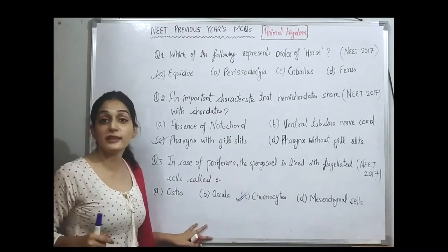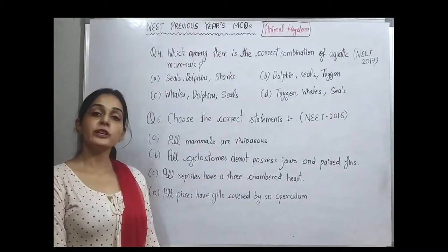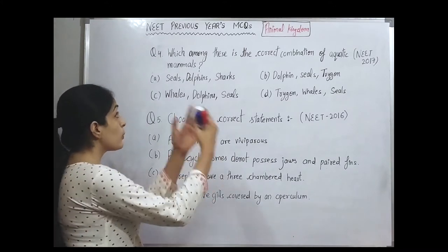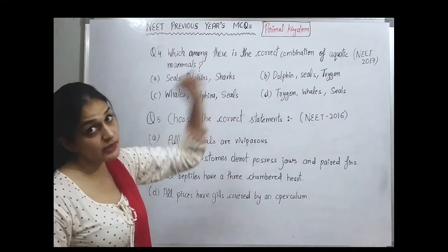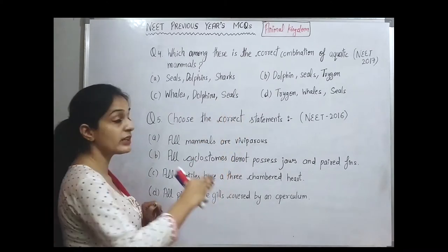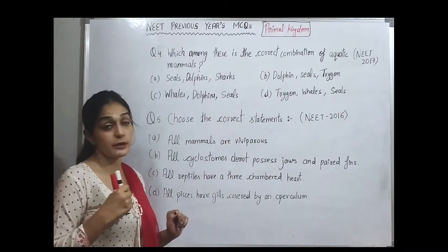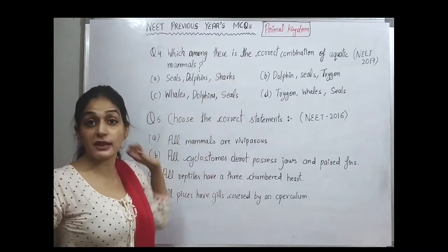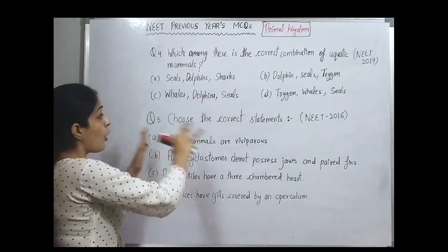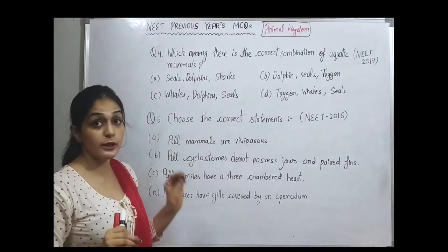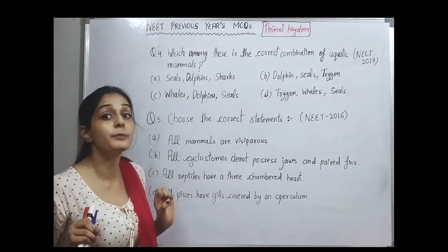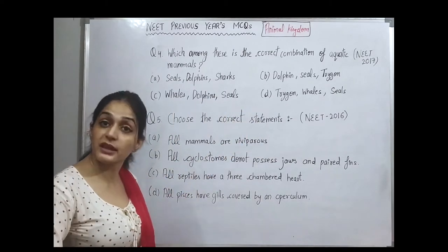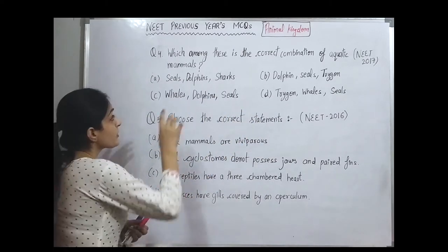Question number four, from 2017: which among these is the correct combination of aquatic mammals? We need to find options where all animals listed are both aquatic and mammals. Some options include animals that are aquatic but not mammals, so we need to carefully identify the all-mammal aquatic combination.